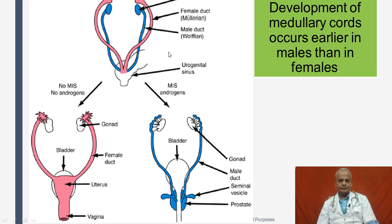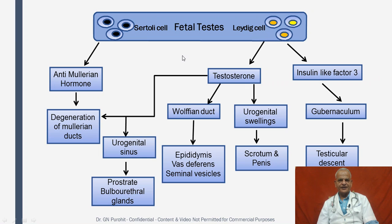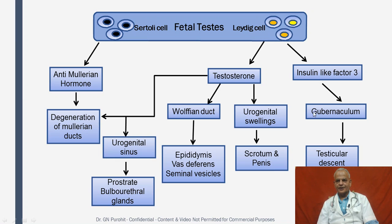The Müllerian ducts are the parts from which female ducts develop, and the Wolffian duct is where male organs develop. Within the fetal testes, the Sertoli cells produce anti-Müllerian hormone, which causes degeneration of the Müllerian ducts. The Leydig cells start producing testosterone and insulin-like growth factor 3. Testosterone helps in development of the Wolffian ducts, leading to growth of the epididymis, vas deferens, and seminal vesicles, and also helps in the conversion of urogenital swellings into scrotum and penis. Insulin-like growth factor 3 affects the gubernaculum and helps in testicular descent.